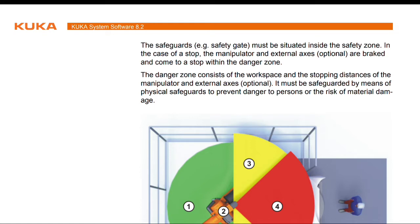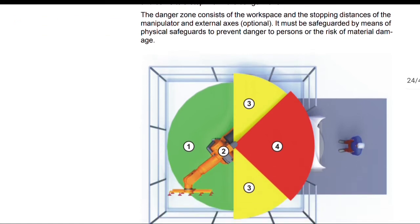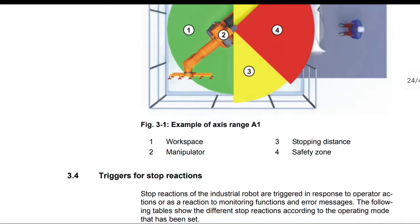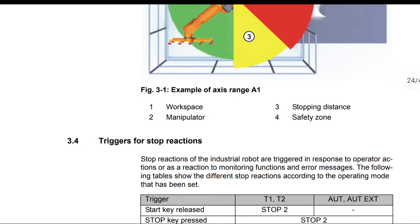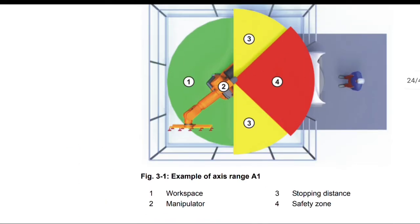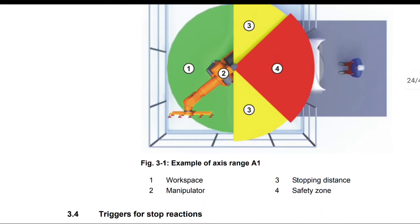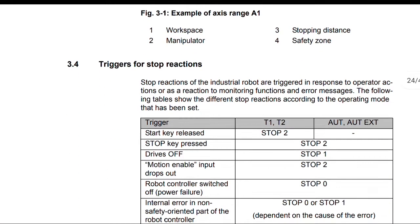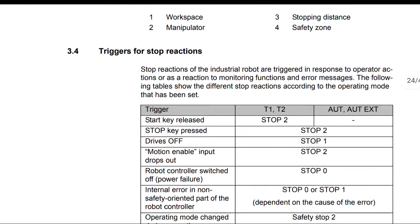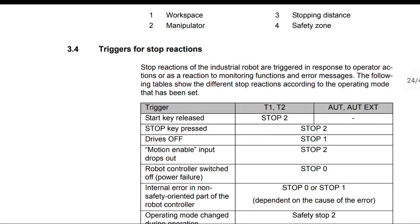Example of Axis Range A1: Workspace, Manipulator, Stopping Distance, Safety Zone.